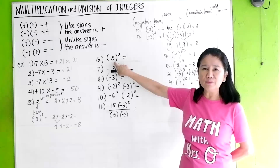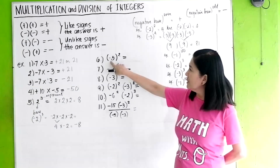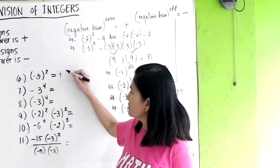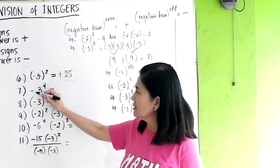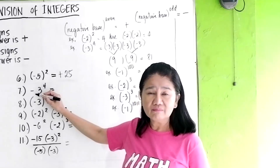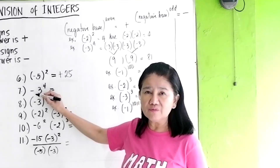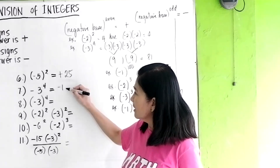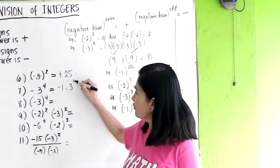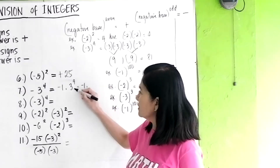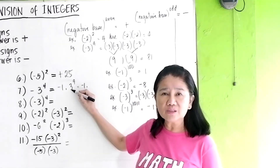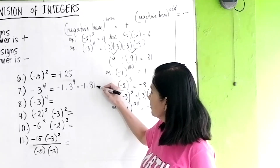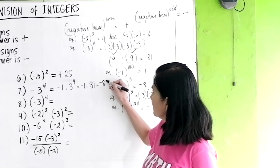Here: negative base, even exponent — your answer will be positive. For example, negative 5 squared gives positive 25. But this next one is different. If you have negative 3 to the 4th without parentheses, it means negative 1 times 3 to the 4th. So that's negative 1 times 3 times 3 times 3 times 3, which is negative 1 times 81, giving a negative 81.